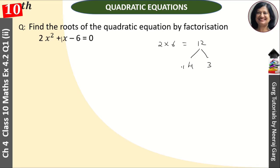Plus of 4 comes and minus of 3 comes, so that is equal to 1. So, 2x square plus 4x minus 3x minus 6 is equal to 0.